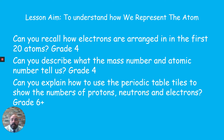Through this presentation, we'll look at how we represent the atom. Recalling how electrons are arranged in the first 20 atoms and drawing electron structures is around a grade four skill. Describing what mass number and atomic number tell us is also grade four, but explaining how to use the periodic table tiles can go up to grade six and above. Using tiles to work out protons, neutrons, and electrons is a grade four or five, while isotope calculations can go beyond grade six.